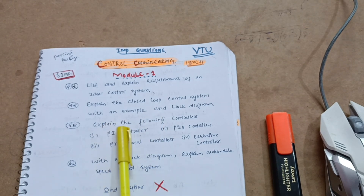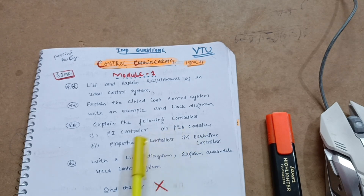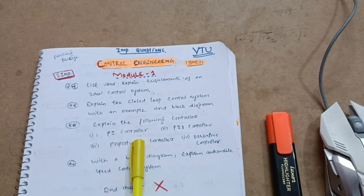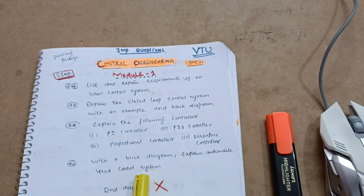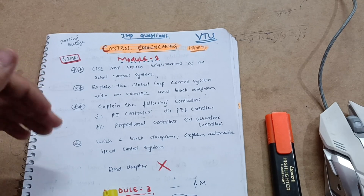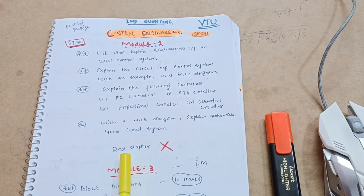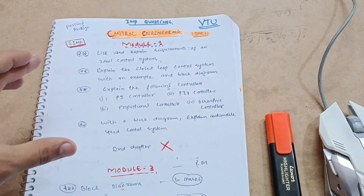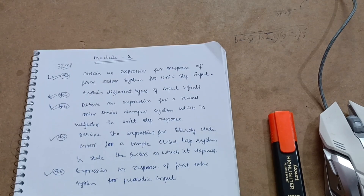Another super important question in Module 1 is: explain the following controllers — Proportional Integral controller, Proportional-Integral-Derivative controller, Proportional controller, and Derivative control. Go through these four controllers, understand the concepts, and you will easily grab 10 marks. Also: with a block diagram explain the automobile speed control system. These theoretical concepts in Module 1 should get you 10 to 14 marks. No need to go through the second chapter problems unless convenient — focus on these frequently asked theoretical questions.